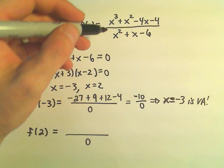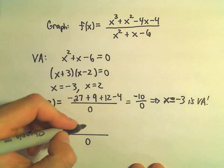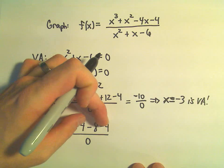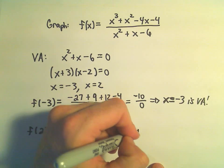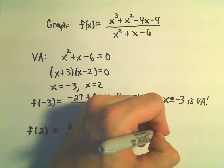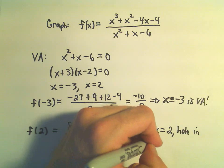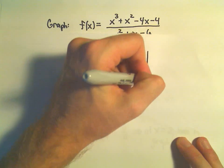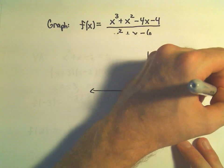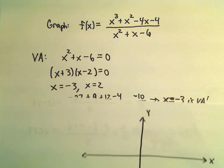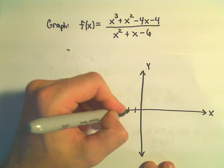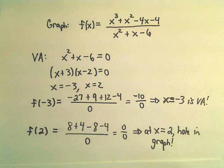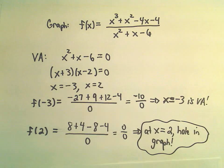If we plug 2 into the numerator, we get 2 cubed which is 8, plus 2 squared which is 4, minus 4 times 2 which is 8, minus 4. 8 minus 8 is 0 and 4 minus 4 is 0, so we're getting 0 over 0. That tells me at x equals 2 there's going to be a hole in the graph. I'll go ahead and mark the vertical asymptote at negative 3 on the graph and keep in mind the hole at x equals 2.